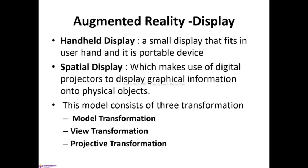The other two display models of augmented reality are handheld display and spatial display. The handheld display is a small display that fits in the user's hand and is a portable device — for example, iPhone and Android phone. Spatial display makes use of digital projectors to display graphical information onto physical objects.